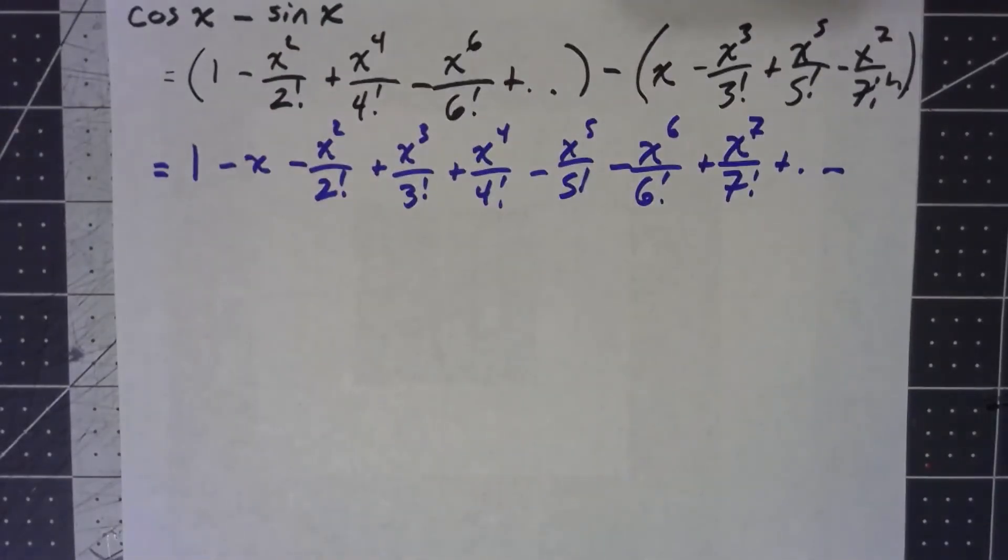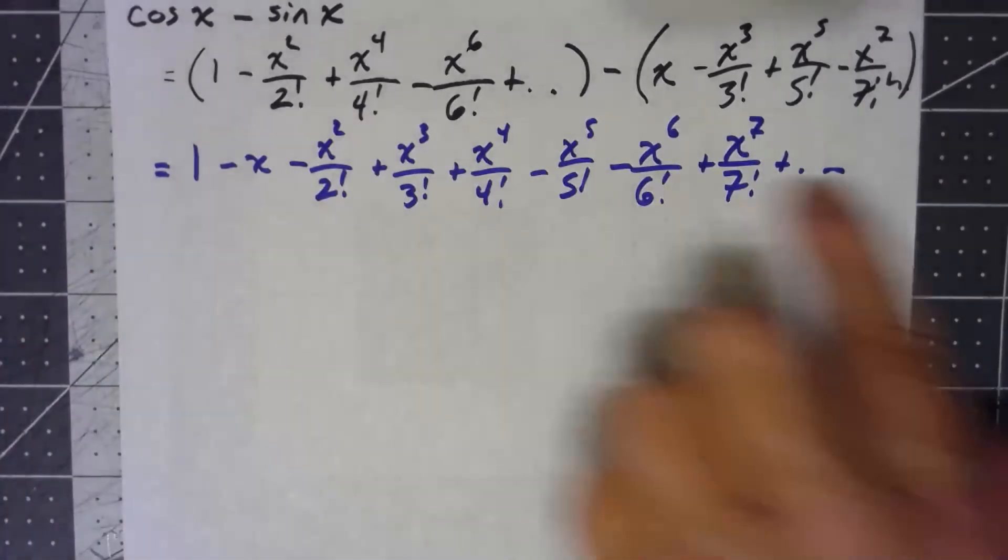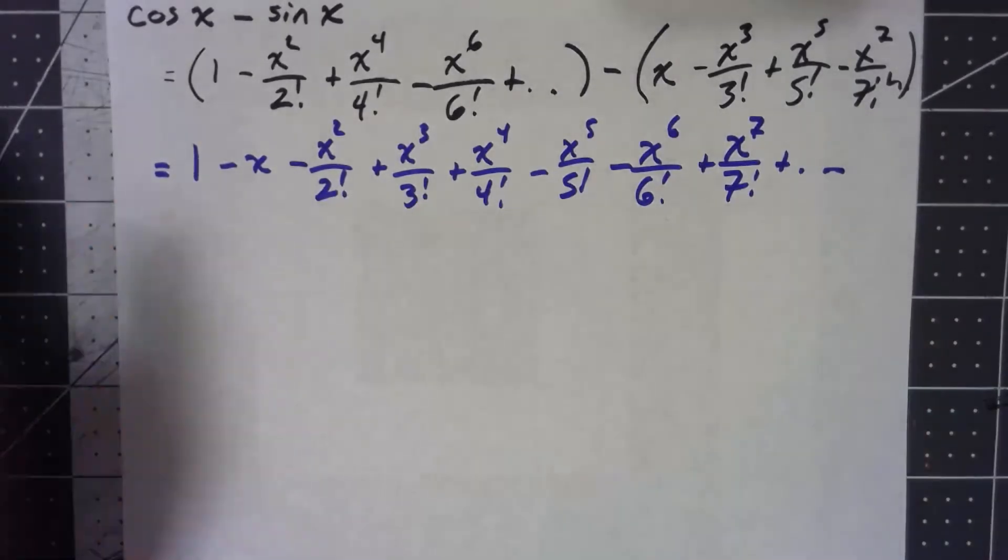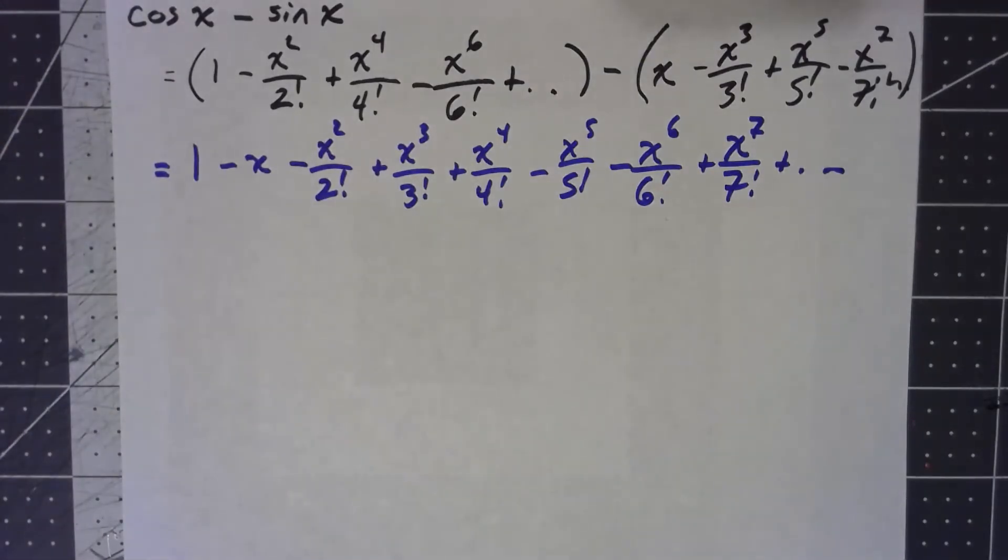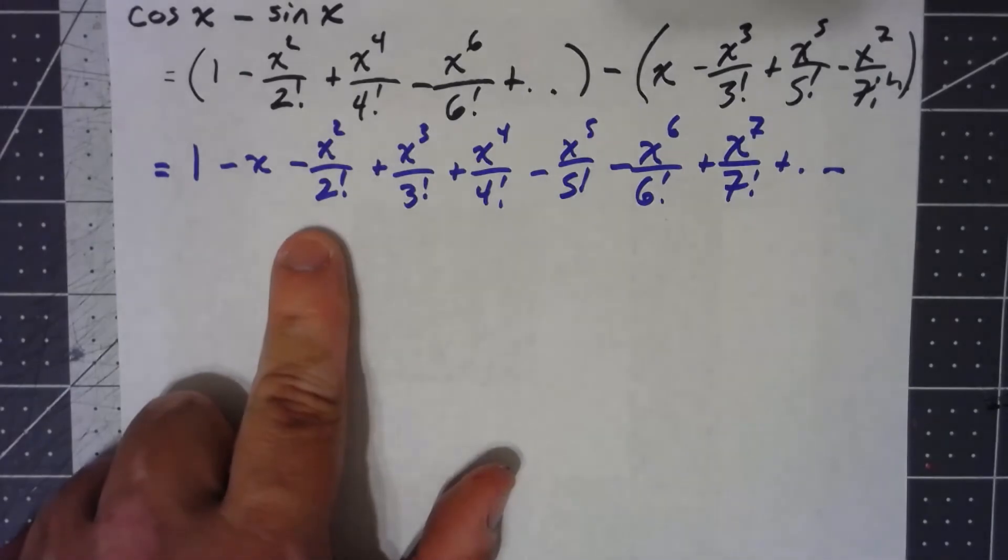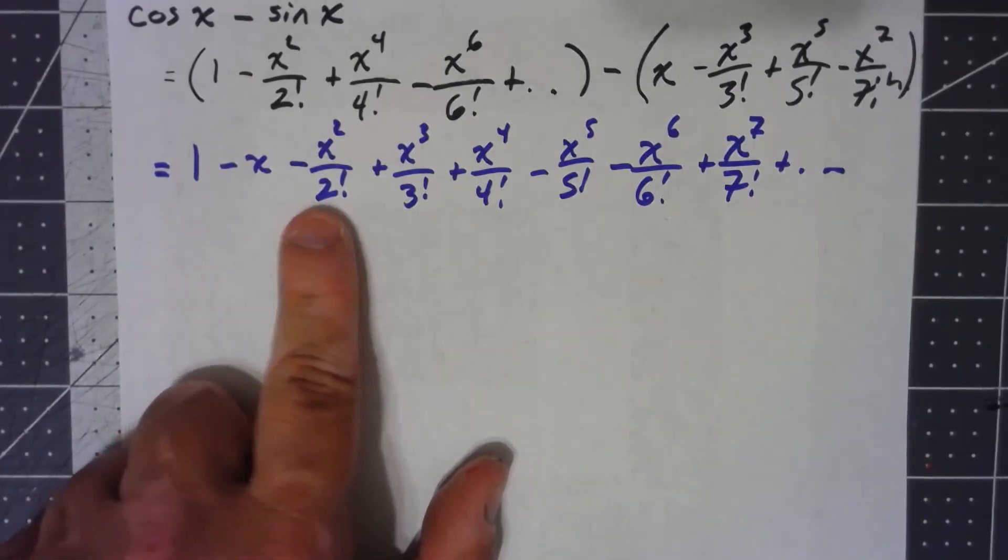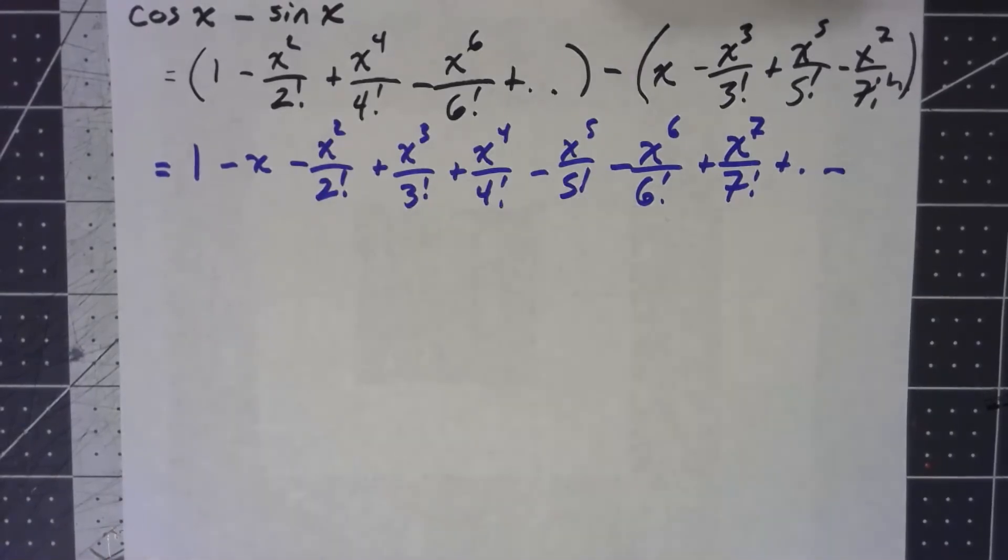For the most part, this is easy to see. Powers of x are just going up one at a time. The factorial on the bottom always matches the power of x. The only tricky thing then is how do I get this negative, positive, negative, negative, positive, positive, negative, negative. It's like an alternating series, but it alternates two at a time.